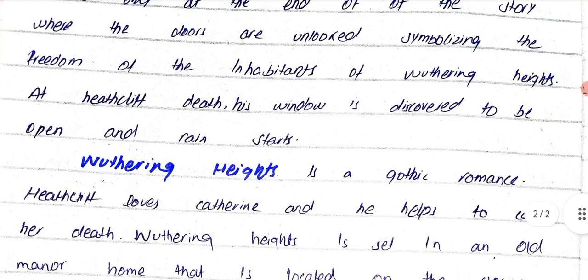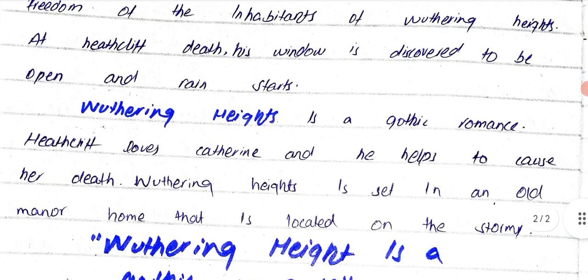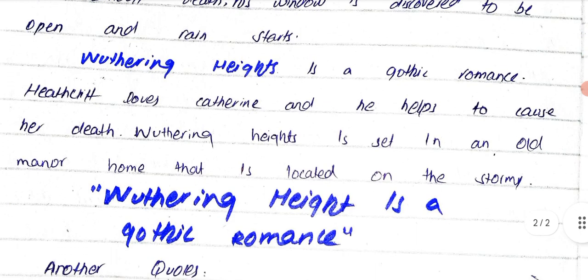Wuthering Heights is rich in Gothic elements. Heathcliff loves Catherine and yet he helps to cause her death. The novel is set in an old manor home located on a stormy moor.